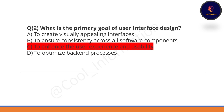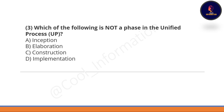Next question: what is the primary goal of user interface design? Option C is correct — to enhance the user experience and usability. Next question: which of the following is not a phase in the unified process? Implementation is not a phase in the unified process. Option D is correct.